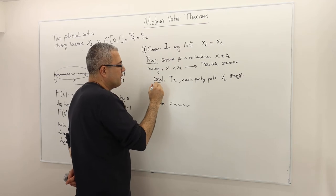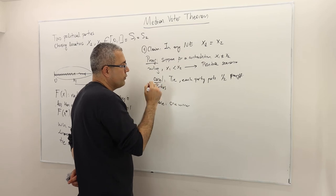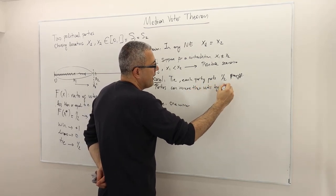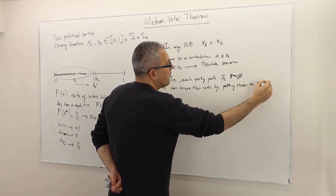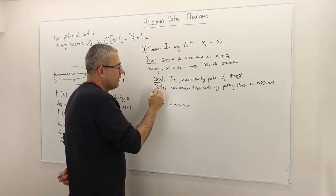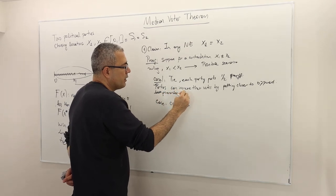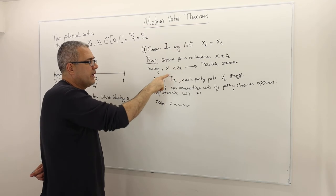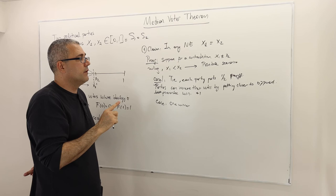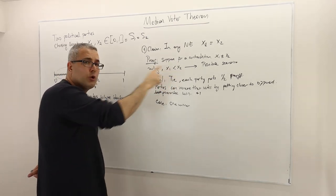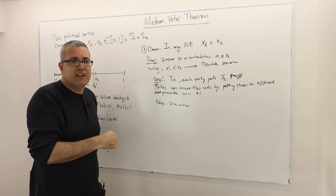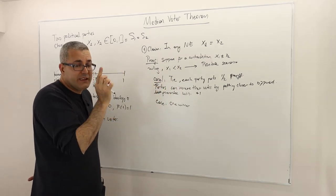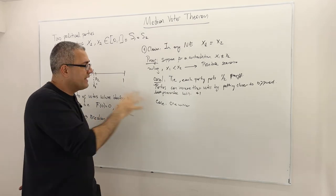Parties can increase their votes by getting closer to the opponent, and hence guarantee winning the election, which means a payoff of plus one. So if x1 less than x2 leads to a tie, one of those political parties — it could be party 1 or party 2 — has an incentive to deviate and win by getting closer to the opponent. Therefore in case of a tie, at least one player is not best responding, and hence this cannot be a Nash equilibrium.